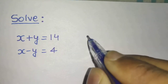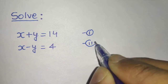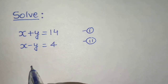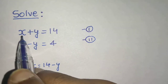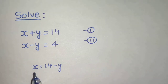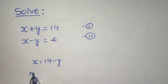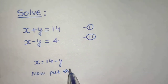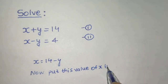Let's suppose this is equation number 1 and this is equation number 2. From equation 1, I can say that x is 14 minus y. If you leave x on this side and take y to the RHS, then you will get x equals to 14 minus y. Now, put this value of x in equation number 2.